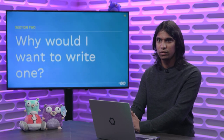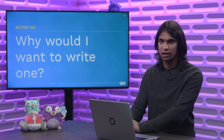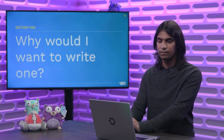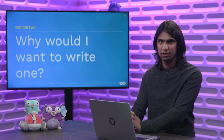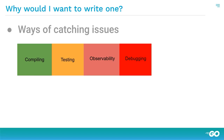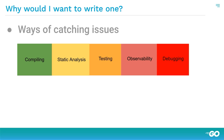So why exactly would you want to write your own static analysis tool? There are plenty of tools out there like static check and GoVet. We should first talk about how you catch issues in a project. You'll often go through this pipeline: you compile your program, you test it with unit tests or integration tests, you might introduce logs, metrics, and traces to ingest information related to sending alerts, and you might use that information to debug your program.